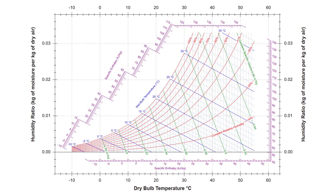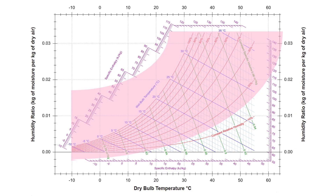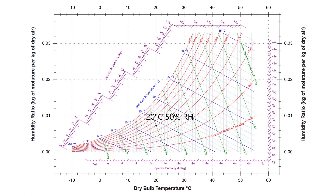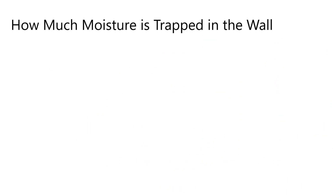To find out how much moisture is in the air at a given condition, we need to look at the psychometric chart. Along the bottom is the temperature in degrees centigrade, the red curved lines indicate relative humidity, and the side shows moisture content. Assuming we're insulating on a fairly warm day — 20 degrees centigrade at 50% relative humidity — the moisture content of that air is 7.3 grams, or 0.0073 kilograms per kilogram of air.